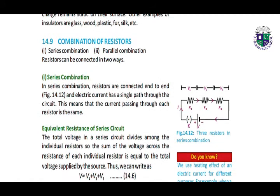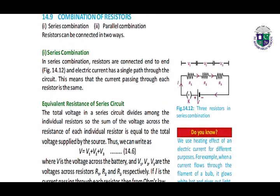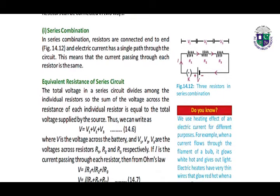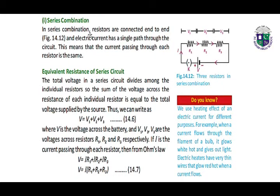Here we have the examples. Combination of resistors — we can combine resistors in the form of series. In series combination, resistors are connected end to end. Here we have the picture showing three resistors in a series combination. This means that the current passing through each resistor is the same.